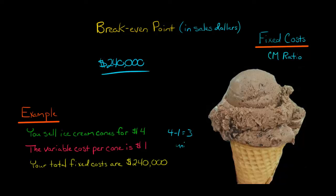What that means is every time we sell an ice cream cone, we generate $3 of contribution margin. That's $3 that after covering our variable costs can go toward our fixed costs. That's the unit contribution margin, so it's 3.